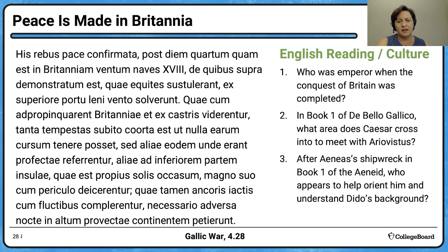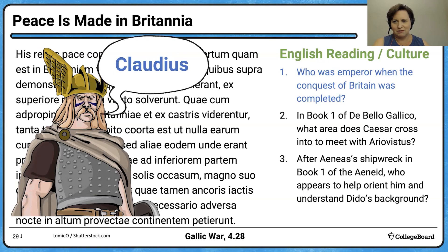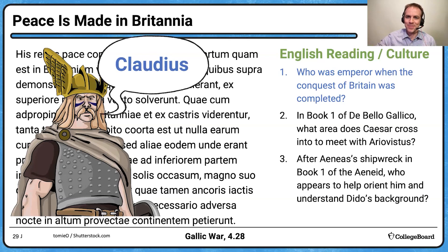Sample culture questions: Who was emperor when the conquest of Britain was completed? Julius Caesar was never emperor and didn't complete the conquest — it was the Emperor Claudius. In book one of De Bello Gallico, what area does Caesar cross into to meet with Ariovistus? Caesar crosses into Germanic territory — modern-day Germany. 'Germania' or 'German territory' would all be fine answers.